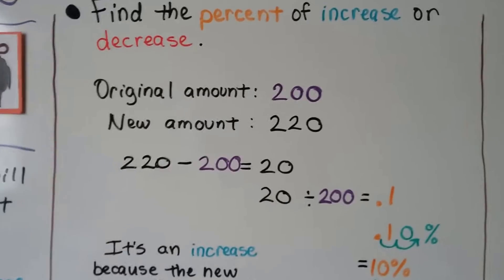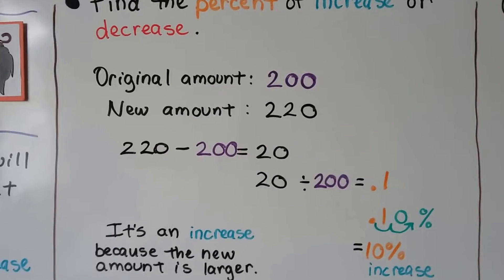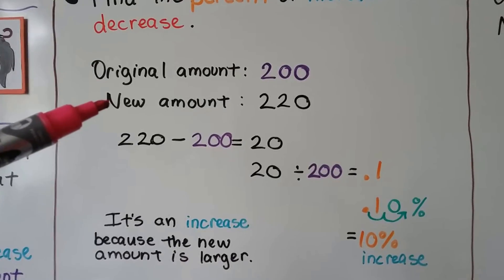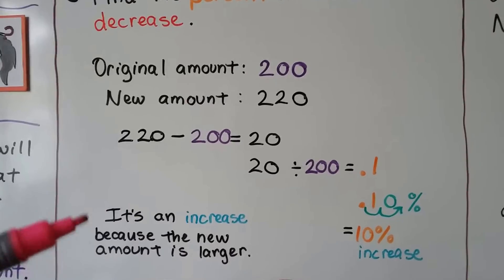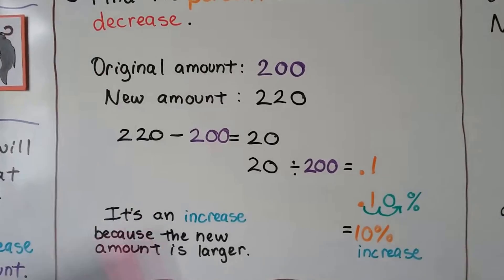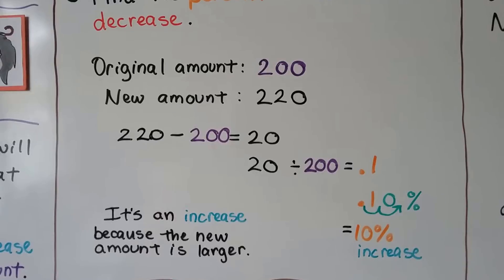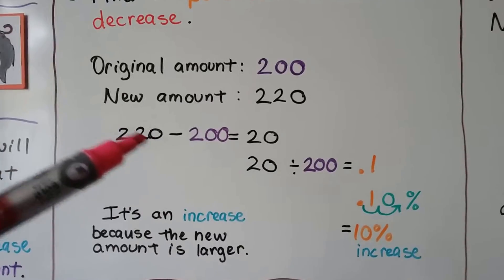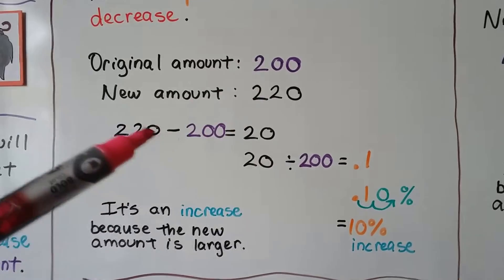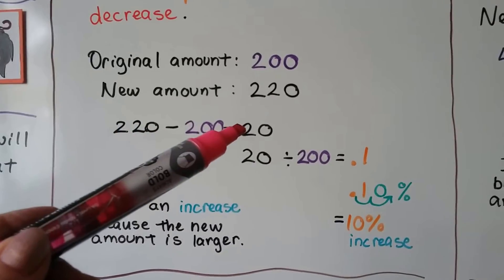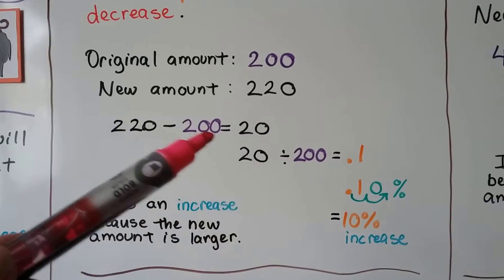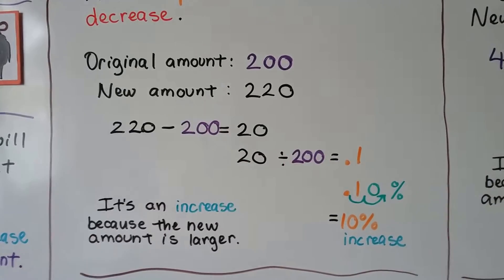Find the percent of increase or decrease. The original amount is 200 and the new amount is 220. This is an increase because the new amount is larger than the original amount. We subtract to find the difference: 220 minus 200 is 20. Then we take this 20 and divide it by the original number, and we get 0.1.